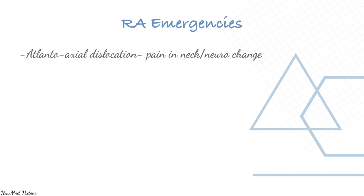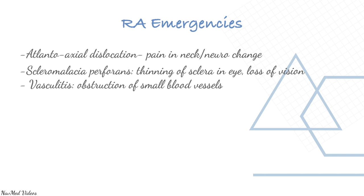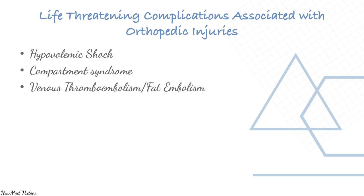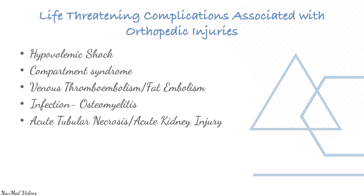Rheumatoid emergencies include atlanto-axial dislocation causing neck pain, scleromalacia perforans (thinning of the sclera in the eyes), vasculitis, acute exacerbation of rheumatoid arthritis, synovitis, and infections. Life-threatening complications include hypovolemic shock, compartment syndrome, venous thromboembolism, infection, osteomyelitis, and acute avascular necrosis.